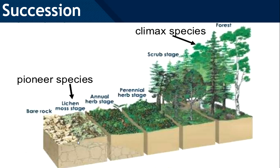Slowly the barren rock changes into soil that is full of nutrients. Over time, different kinds of seeds can fall there and insects can come. If there are insects, birds will slowly come as well.